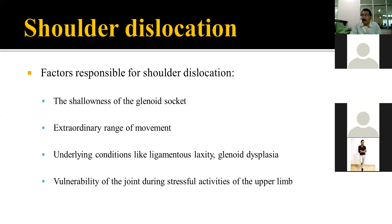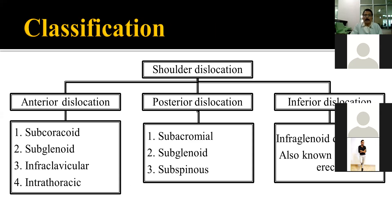Dislocation is more common in the shoulder joint because the cavity is very shallow and the range of motion is extraordinary — one can move from the posterior to anterior to superior side. This makes it more vulnerable to dislocation. Classifying shoulder joint dislocation: most commonly it is the anterior type. Unlike the hip joint where posterior dislocation is most common, in the shoulder joint anterior type is the maximum — almost 80 to 90 percent of cases. The rest are posterior and inferior types, which are the least common.